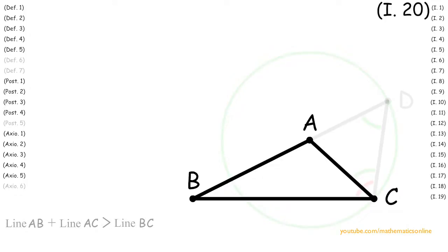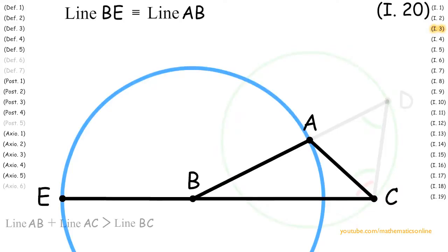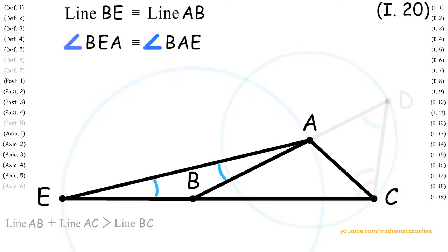Next, we extend line CB to an arbitrary point E. With line AB and line BE, we apply Proposition 3 so that line BE is congruent to line AB. Next, we create line AE with Postulate 1. Now since triangle ABE has two sides that are congruent, then by Proposition 5, angle BEA is congruent to angle BAE.